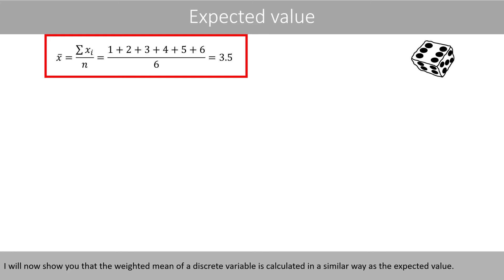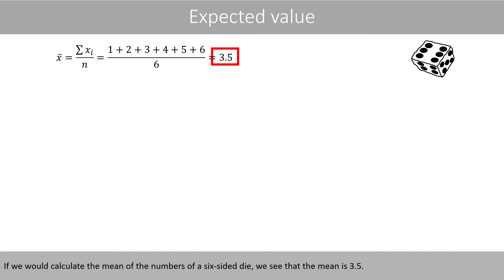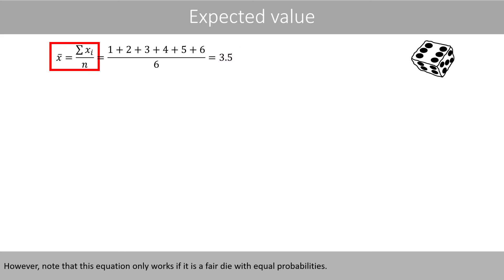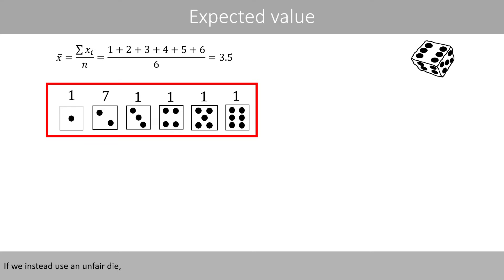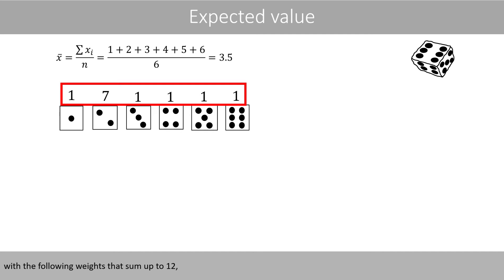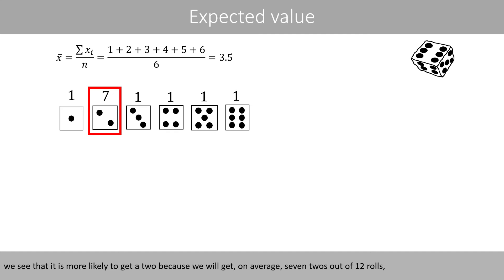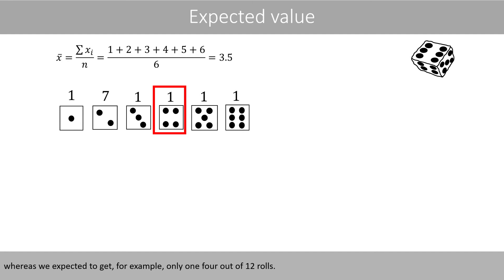I will now show you that the weighted mean of a discrete variable is calculated in a similar way as the expected value. If we calculate the mean of the numbers of a six-sided die, we see that the mean is 3.5. However, note that this equation only works if it is a fair die with equal probabilities. If we instead use an unfair die with the following weights that sum up to 12, we see that it is more likely to get a 2, because we will get on average 7 twos out of 12 rolls, whereas we expect to get only 1 four out of 12 rolls.